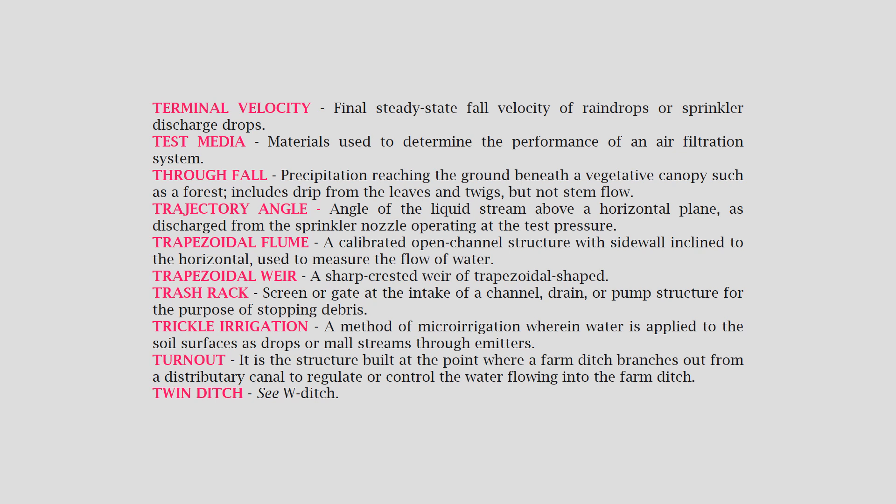Trajectory angle: the angle of the liquid stream above a horizontal plane as discharged from the sprinkler nozzle operating at the test pressure. Trapezoidal flume: a calibrated open channel structure with sidewalls inclined to the horizontal, used to measure the flow of water. Trapezoidal weir: a sharp-crested weir of trapezoidal shape. Trash rack: a screen or gate at the intake of a channel, drain, or pump structure for the purpose of stopping debris.